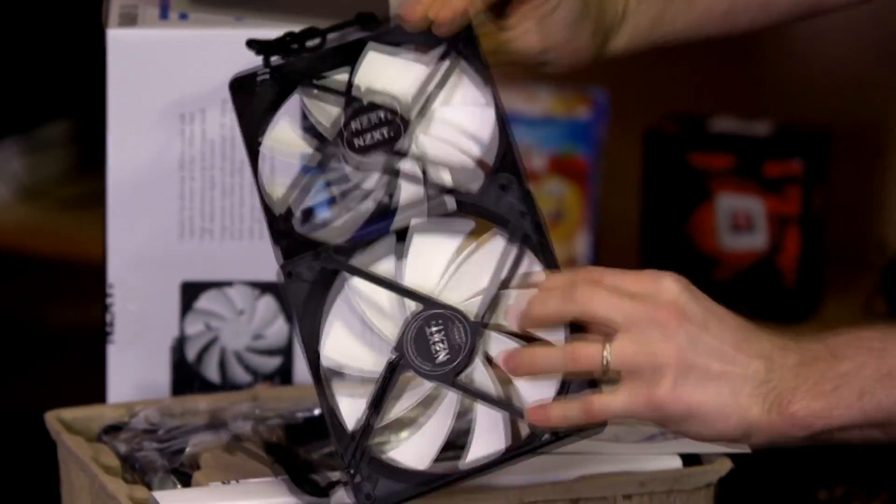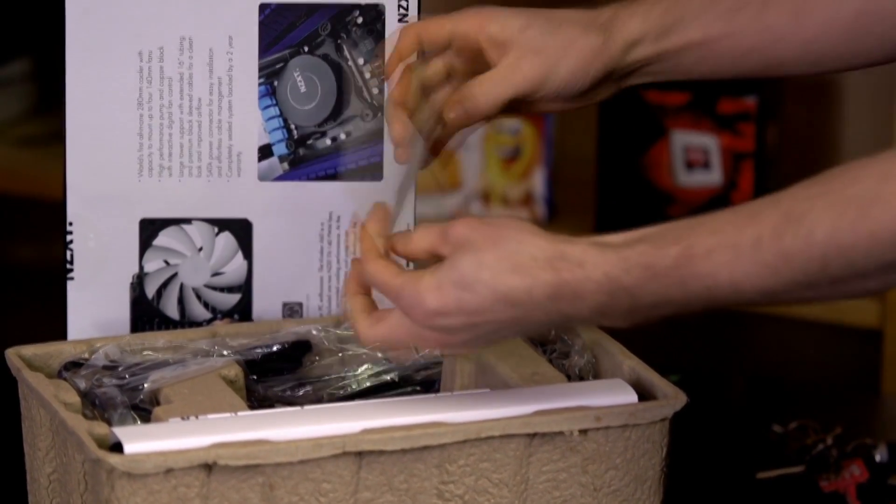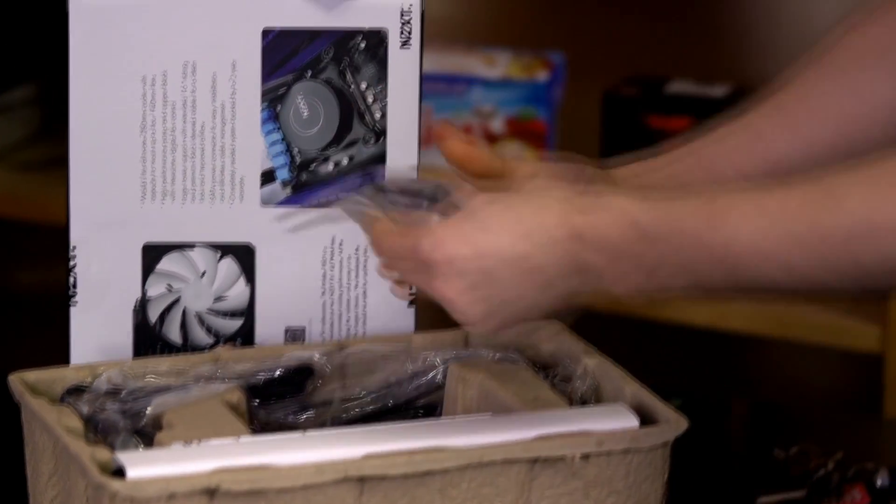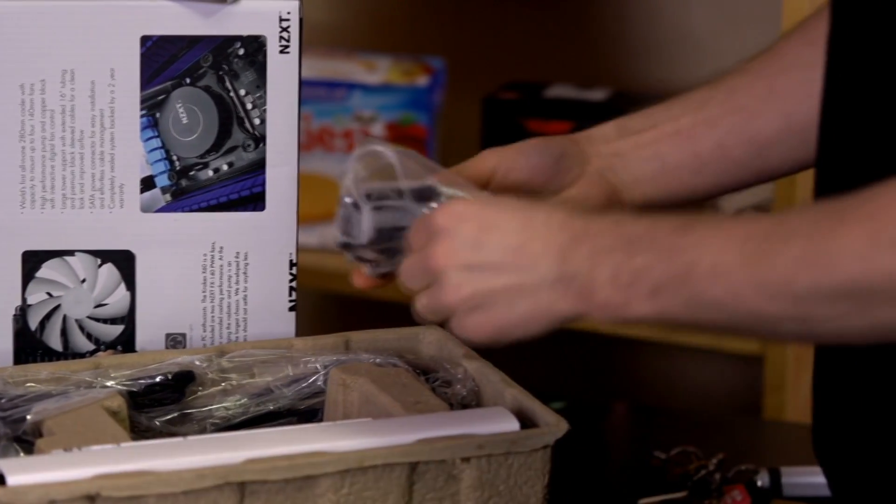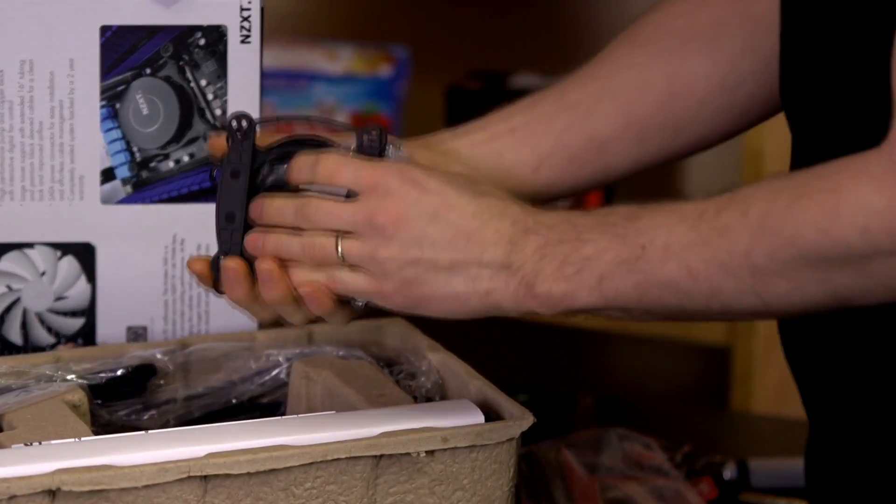So you can see NZXT includes a couple of their black and white fans. I don't know that this is a particularly high pressure design. Here's the Kraken controller version 1.1 software. You can download the latest off the NZXT website, but you can replace them with Noctuas, and then you'll know for sure that you have a pressure optimized design.